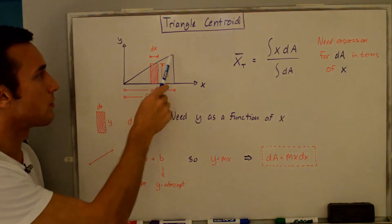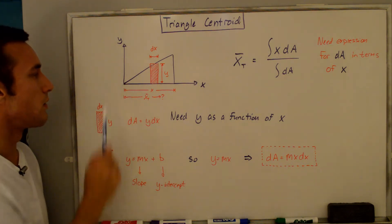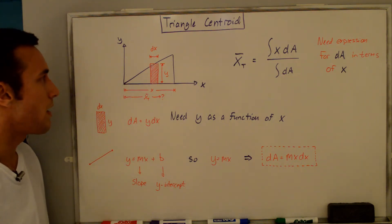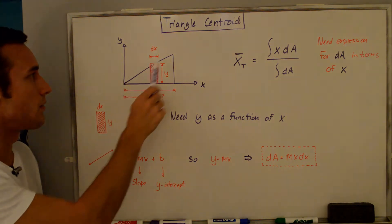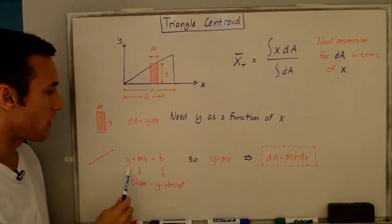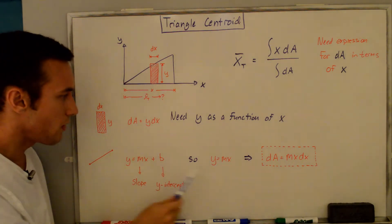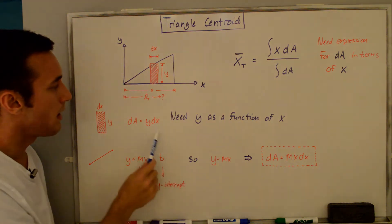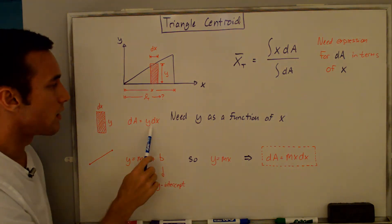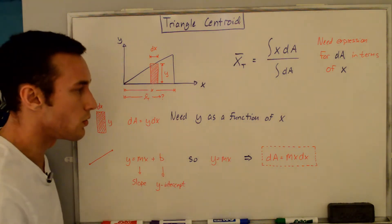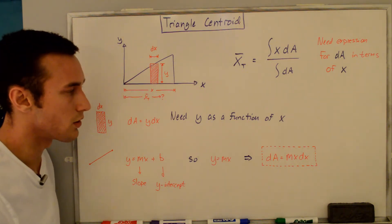Based on how we drew this, we set the vertex to the origin so the y-intercept of this line is equal to zero. We can rewrite y equals mx plus zero. We can plug this y into the differential area equation to get dA equals mx dx, which is only a function of x now.